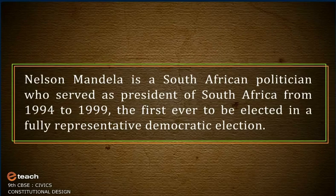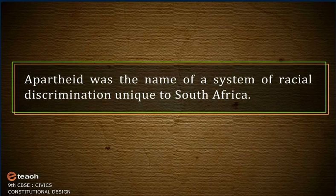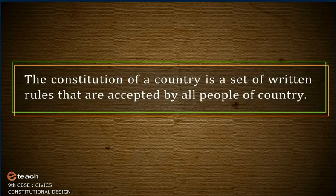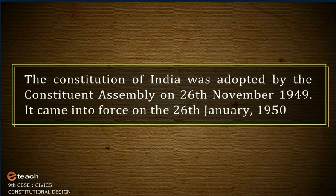Nelson Mandela is a South African politician who served as President of South Africa from 1994 to 1999 — the first ever to be elected in a fully representative democratic election. Apartheid was the name of a system of racial discrimination unique to South Africa. The Constitution of India is a set of written rules accepted by all people of the country, adopted by the Constituent Assembly on 26th November 1949, and it came into force on 26th January 1950.